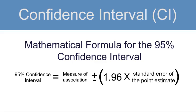Here is the mathematical formula for a 95% confidence interval. The measure of association could be a risk ratio, a prevalence odds ratio, a rate ratio, etc. You take that estimate and then subtract 1.96 times the standard error of the point estimate to get the lower 95% confidence bound. To get the upper 95% confidence bound, you add 1.96 times the standard error. Note that 1.96 is specific to the 95% confidence interval. If you wanted to calculate the 99% confidence interval, you would use 2.575, and for a 90% confidence interval, you would use 1.645.